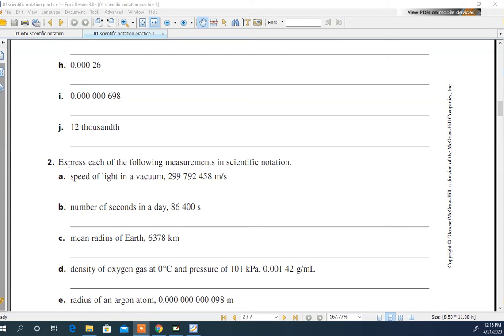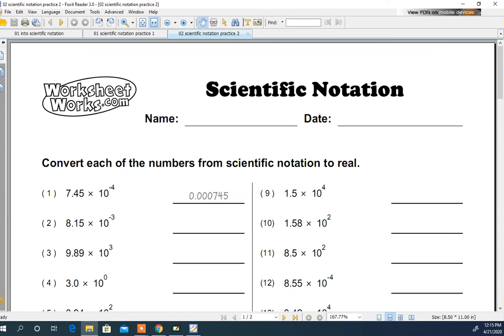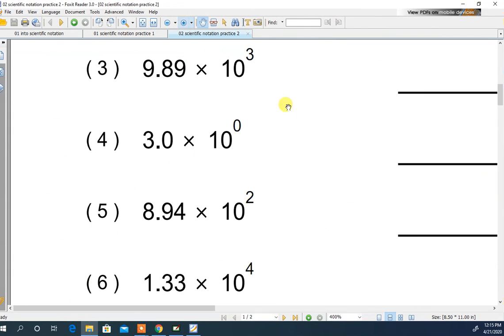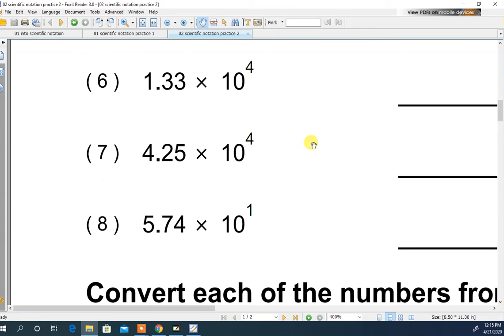Okay. Let's do some the other way. Let's take some numbers out of scientific notation. Let me zoom in a little bit. Let's do number 6 right here. Let's take this guy out of scientific notation. So I have 1.33 times 10 to the 4th. I'm going to add four zeros. And I'm going to make four jumps. So what is that? 13,300.